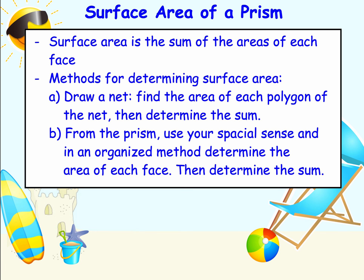There are basically two methods you can use for finding the surface area of a prism. Both methods involve finding the sum of the areas of each face. You can either draw the net, which breaks down the prism into rectangles and triangles and then finds their sum, or you can use your spatial sense and organize your thinking without going through the net process.